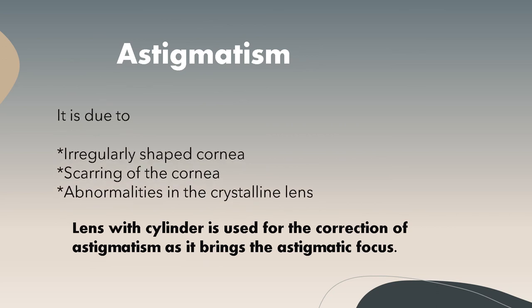Astigmatism is caused by an irregularly shaped cornea, scarring of the cornea, or abnormalities in the crystalline lens. A cylindrical lens is used for the correction of astigmatism, as it brings the astigmatic focus to a single point. Symptoms of uncorrected astigmatism include eye strain and headaches, especially after reading or other prolonged visual tasks.